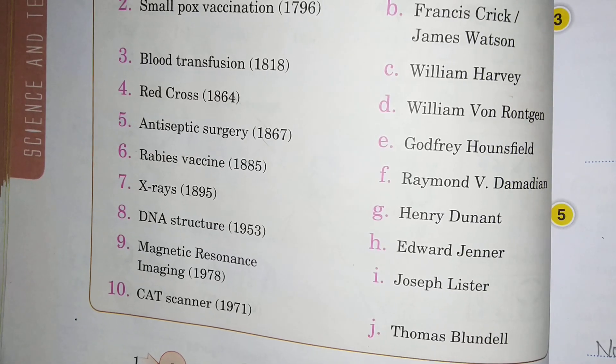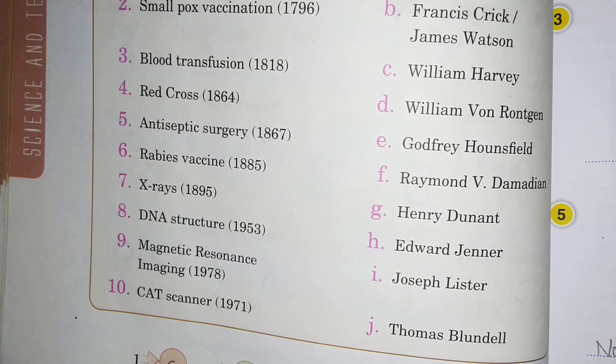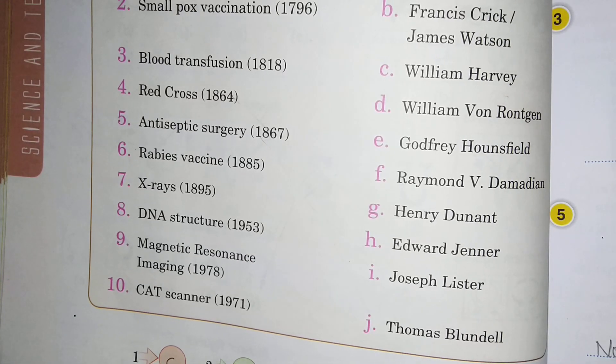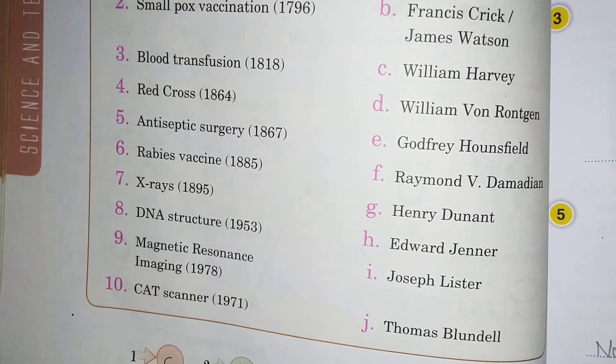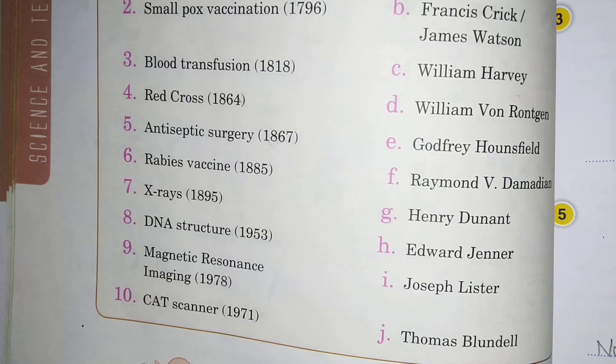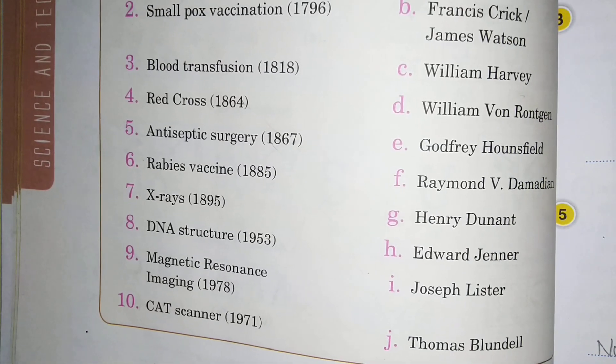Red Cross ki khus kis nai ki thi 1864 mein? That is option G, Henry Dunant.